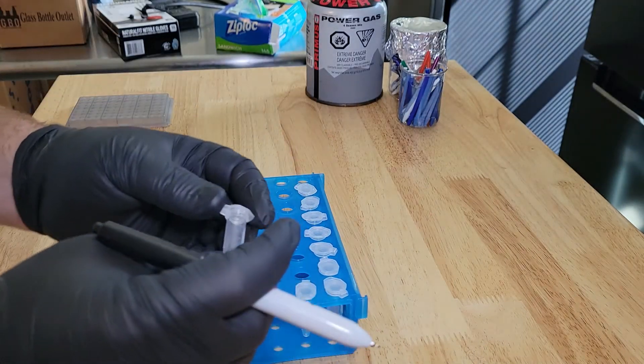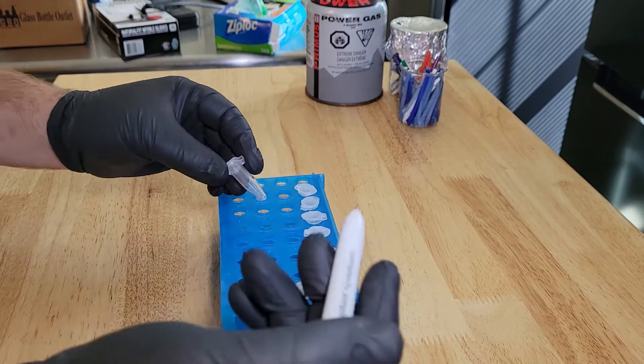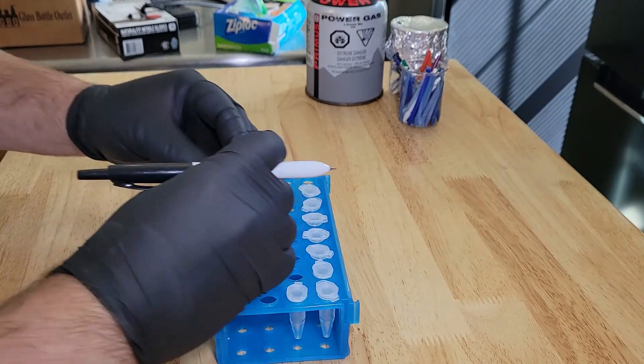You're going to want nine microcentrifuge tubes. Label them with the number and the date.